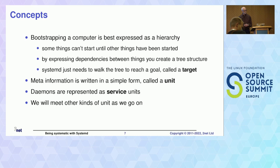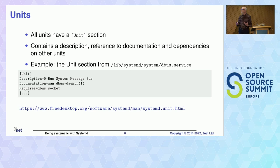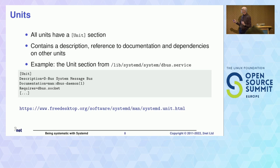Here's a unit. It's a very simple format — just a text file. It begins with a Unit section, where sections are in square brackets. In this case we just have a description, some reference to documentation, and a dependency — a Requires. Full information about units is at the link at the bottom.